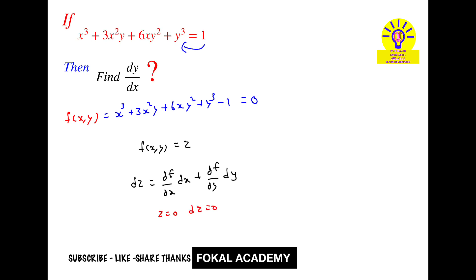Here z equals 0, so dz equals 0. So this becomes 0 equals ∂f by ∂x dx plus ∂f by ∂y dy. Bring this term to this side, so it becomes minus ∂f by ∂x dx equals ∂f by ∂y dy.